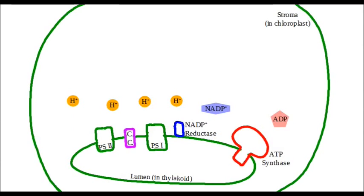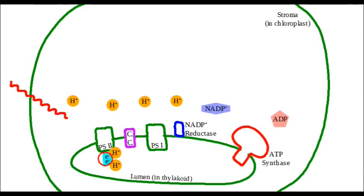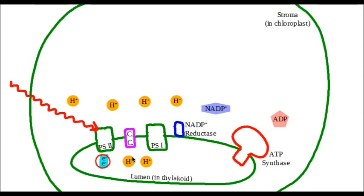It starts out with a water molecule. We know water is essential for plant growth. So the water molecule is going to diffuse into the cell and into the chloroplast. It comes into the thylakoid, and when it reaches Photosystem II, light energy that enters in is going to make contact with Photosystem II. Photosystem II uses this energy to break up the water molecule, which separates these hydrogen ions — they flow out into the lumen of the thylakoid — and these electrons jump into Photosystem II.